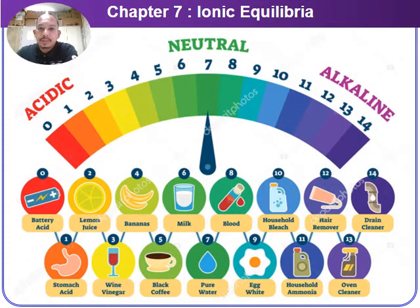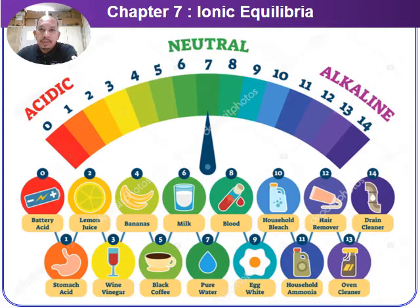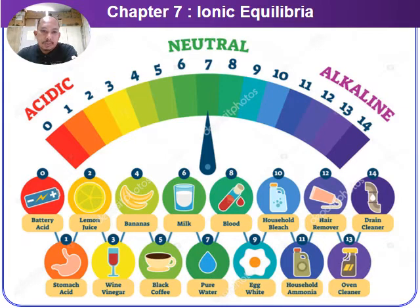Welcome to the chemistry channel. We are entering Chapter 7, which is Ionic Equilibrium. For the ionic equilibrium topic, we have compounds for acidic, neutral, and alkaline solutions, with a pH range that varies from 0 to 14. This is an example of products or samples that have different levels of acidity.